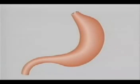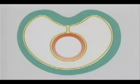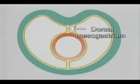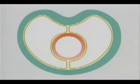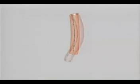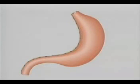The foregut is different from the rest of the GI tract. The hindgut and midgut are attached to the body wall by a double fold of peritoneum only along the back. The foregut is attached also at the front. Its two attachments are the dorsal mesogastrium behind and the ventral mesogastrium in front. As the foregut rotates, the dorsal and ventral mesogastrium rotate with it. The line of attachment of the ventral mesogastrium swings round to the right.